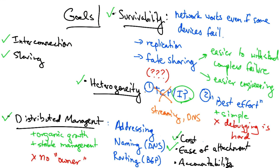Accountability, or the ability to essentially bill, was mentioned in some of the early papers on TCP/IP, but it really wasn't prioritized. Datagram networks can make accounting really tricky. Phone networks had a much easier time figuring out how to bill users. Payments and billing on the internet are much less precise, and we'll talk about these more in later lectures.